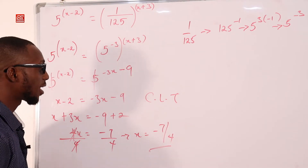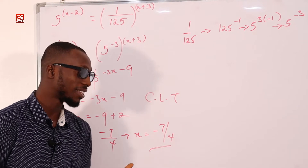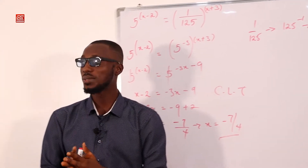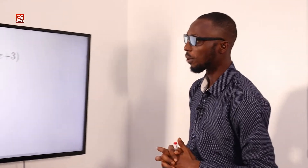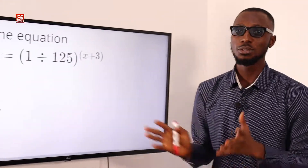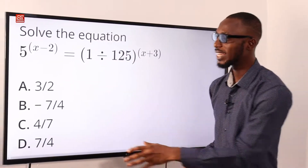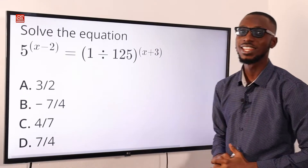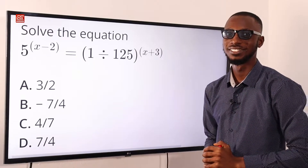Dividing both sides by 4, x equals minus 7 over 4. Let's go back to the screen to select the correct option. X equals minus 7 over 4 — option B is the correct option.